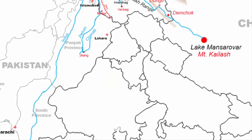In about 250 to 300 km, the river Chenab joins the Indus River at Mithankot. The Indus River then continues and drains into the Arabian Sea.